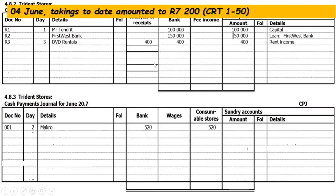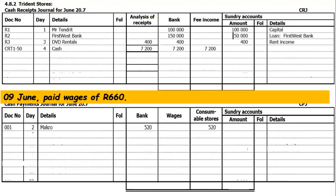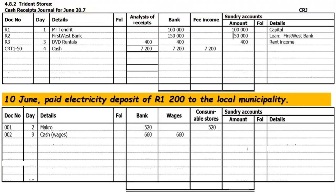On the 4th of June, takings to date amounted to 7,200 rands. Cash Receipt Journal entry: source document CRT 150, date June 4th, details cash, amount 7,200 rands received on the premises — underlined to show banked — and it falls under fee income, which is the core business income. Moving on, transaction on the 9th of June: wages paid, 660 rands. CPJ entry: check number 002, date June 9th, details wages, amount under bank and under wages column.